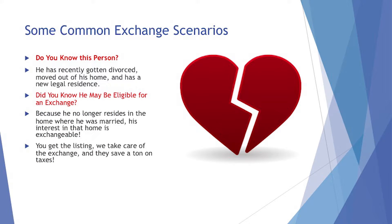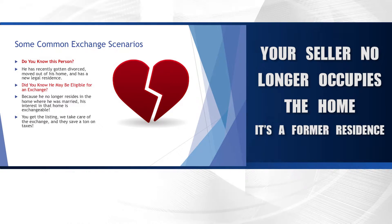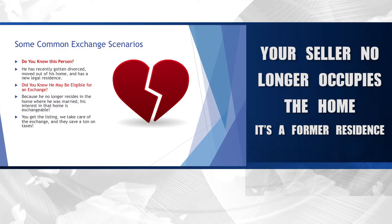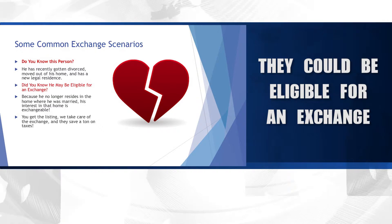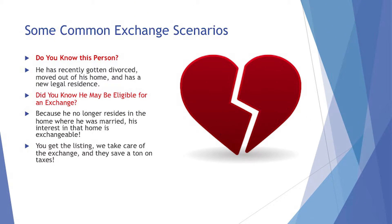Let's take a look at a couple of scenarios. When you start a conversation, you can determine if the person is a prospect for an exchange situation. Do you know this person? They've recently been divorced, moved out of their home, and their former residence is occupied by their former spouse. Once they move out, they create a new legal residence. Did you know they could be eligible for an exchange? Because they no longer live in the home, they can exchange an interest in it as their former residence. By finding somebody in that scenario, you would get a listing, we would take care of the exchange, and the client would save a ton of taxes.